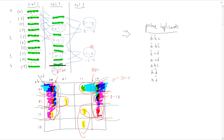A K-map works well up to four variables, but this method can work on many more variables while still keeping things nice and organized. So in this video, we have seen how to find all of the prime implicants of a Boolean function. In the next video, we will explore how to find the minimal subset of prime implicants which realizes the given function.